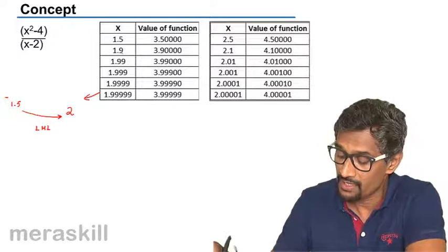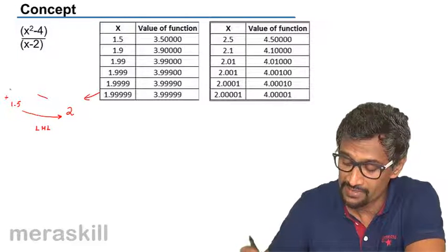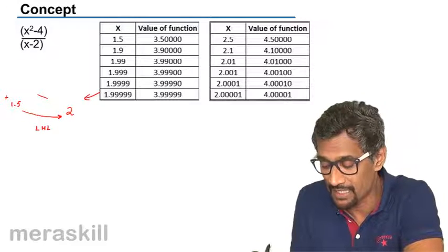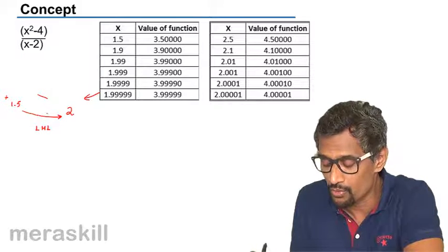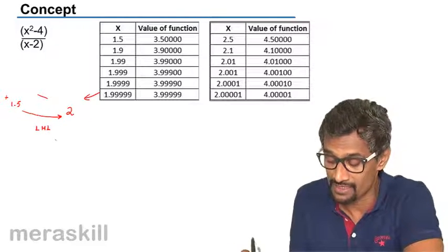This side is called negative side because it is considering values of X lesser than two and you're bringing it closer, any value closest to two but little less than two. So you call that as left hand limit.